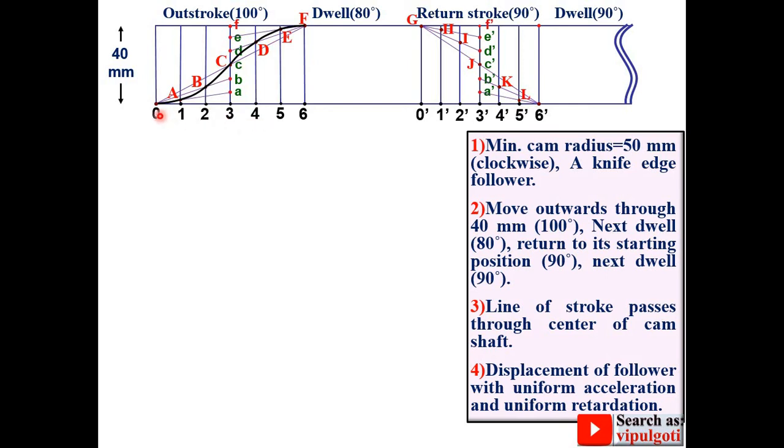So keep in mind that during the ascent angle the follower rises and for the return stroke it will once again come to its original position. So your smooth curve will start from G, H, I, J, K, L and 6 dash.